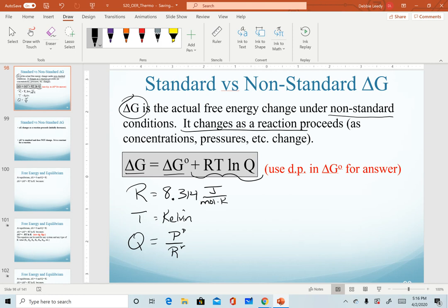The note that I have off to the side is that for this equation, to simplify reporting sig figs, because our last step in this calculation is addition, we're going to use decimal places in delta G naught for our final answer. So however many decimal places you have in your delta G naught value will determine the decimal places to report in your delta G non-standard value.